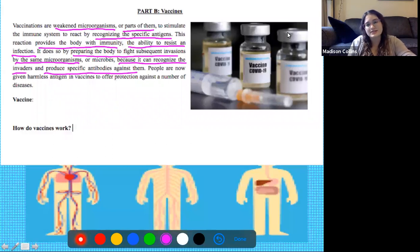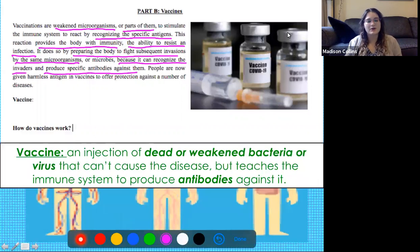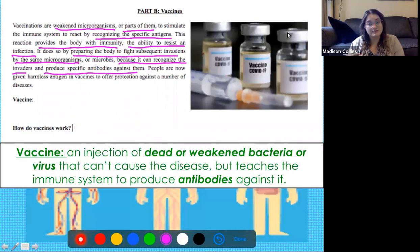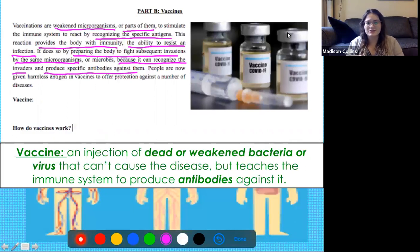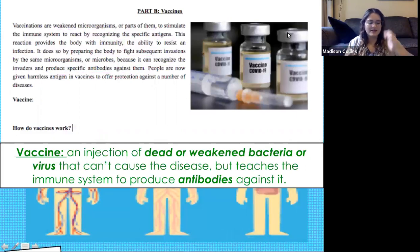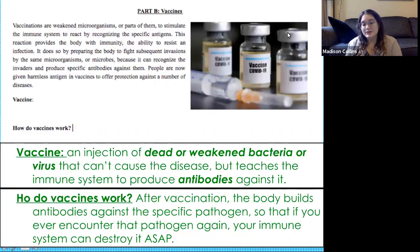So what exactly is a vaccine? Pause this video, use that information to summarize what is a vaccine and how do they work. Vaccines are an injection of dead or weakened bacteria or viruses that can't cause the disease, but they teach your immune system to produce antibodies needed to fight them. Like every time you get your flu shot, that shot contains dead or weakened strains of the virus that cause the flu - it won't give you the flu, it just prepares your body to fight it. After vaccination, your body builds antibodies so if you ever encounter that pathogen again, your immune system is prepared to destroy it.